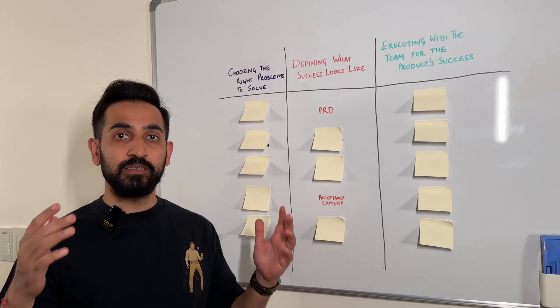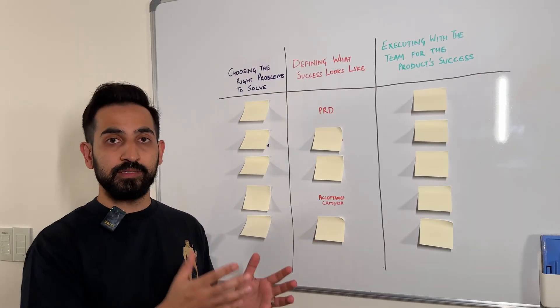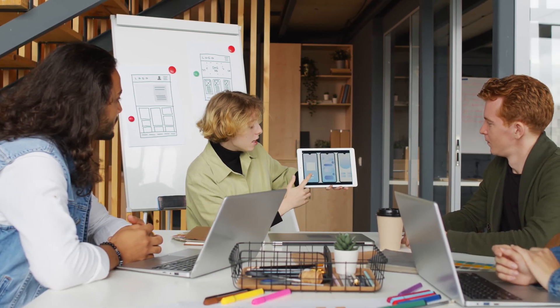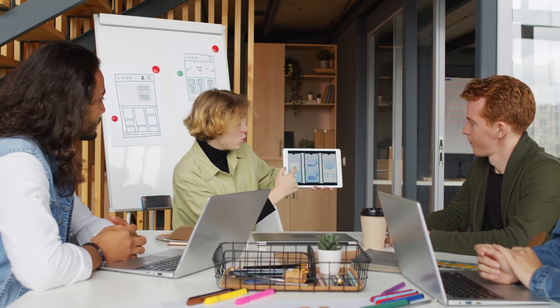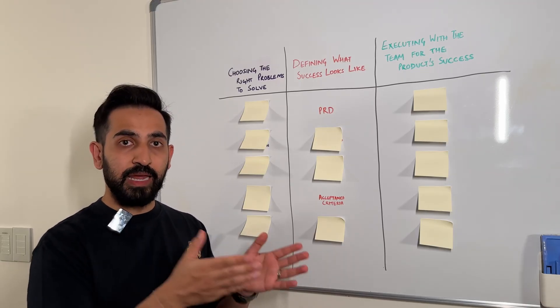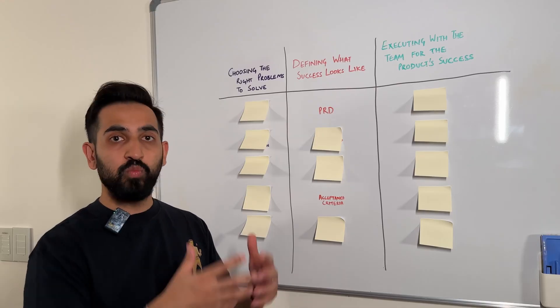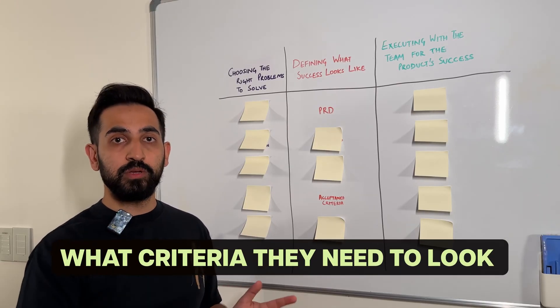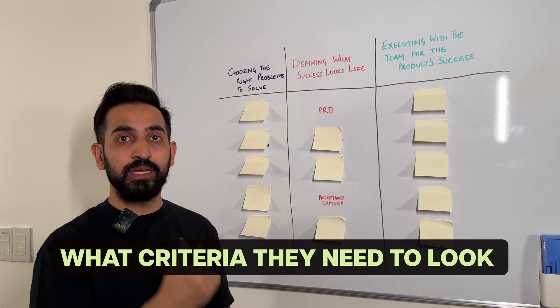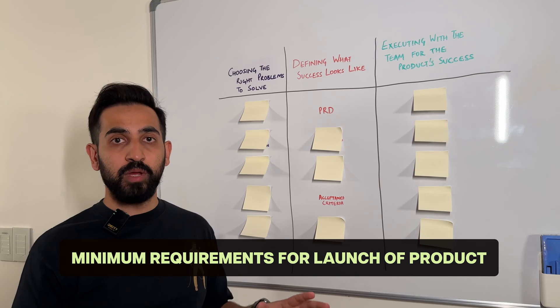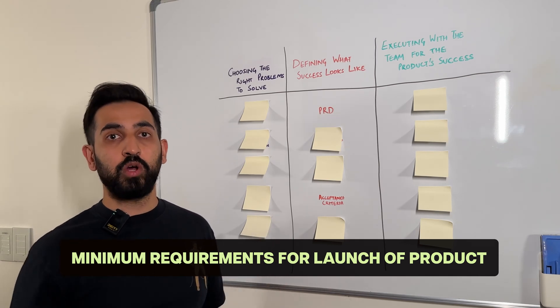Next we have acceptance criteria. The acceptance criteria is usually written in the PRD itself and is a way for the product manager to define what are the minimum requirements that need to be met by the product in order for it to be launched. This is very important for the developers and QA testers who will be working on the product, because it tells them what criteria they need to be looking at to make sure are built into the product — those are the must-haves and minimum requirements needed for launch.